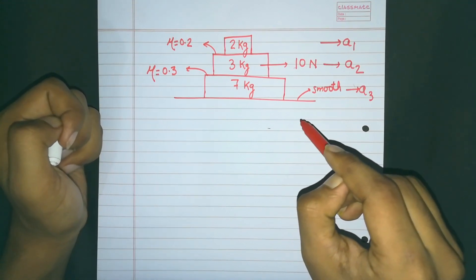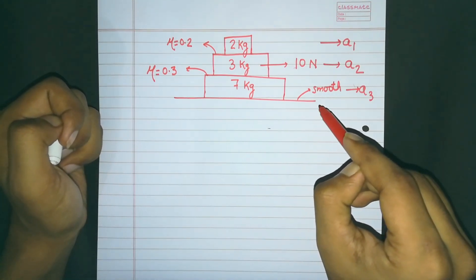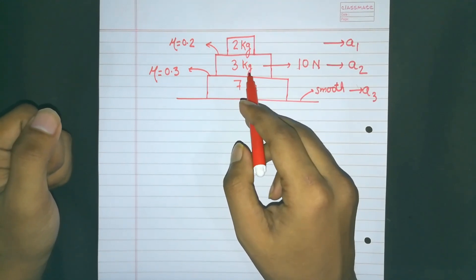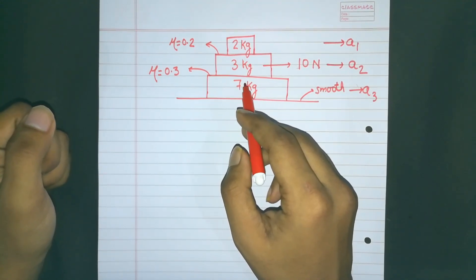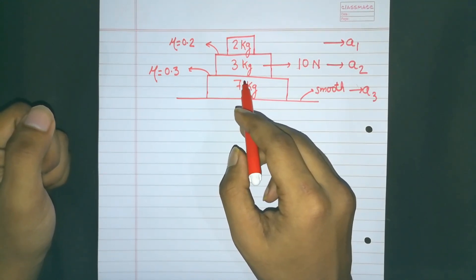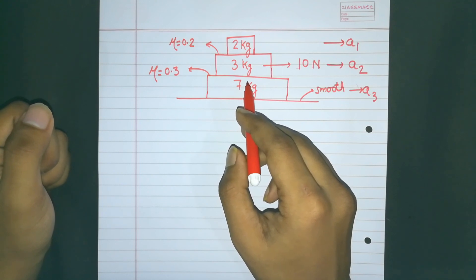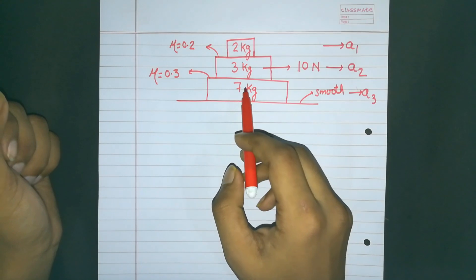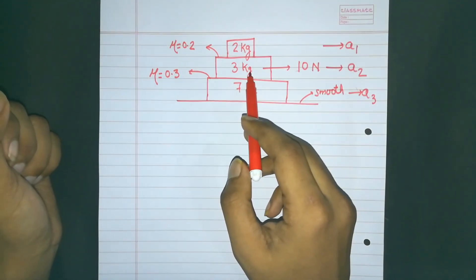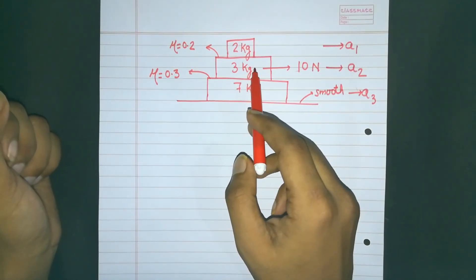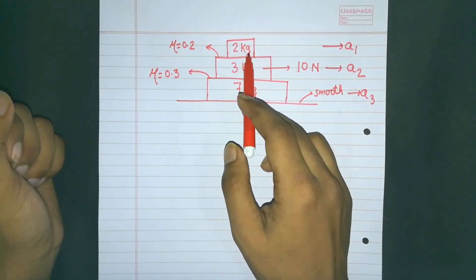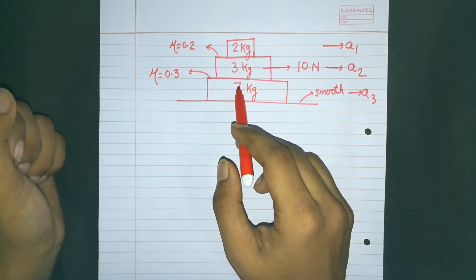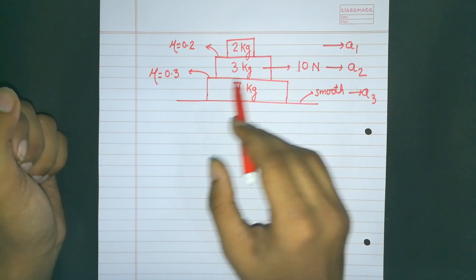We have to calculate the values of A1, A2, and A3. Since the blocks are 3 in number, it would be a bad idea to find the direction of friction using the process we generally use for 2 blocks. We will try to find whether there will be any relative motion between the 3kg and 2kg block, between the 3kg and 7kg block, or whether they will all move together.